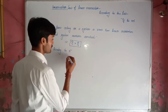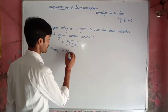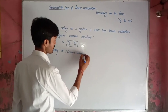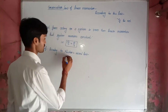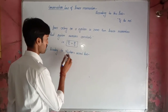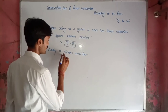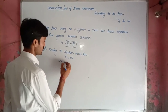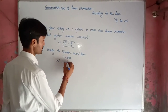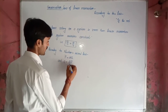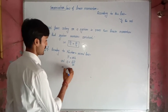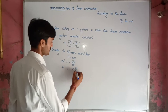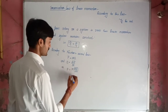Now let's prove this. According to Newton's second law, F equals MA, and A equals the change in velocity with respect to time, which implies that F equals M into delta V by delta T.